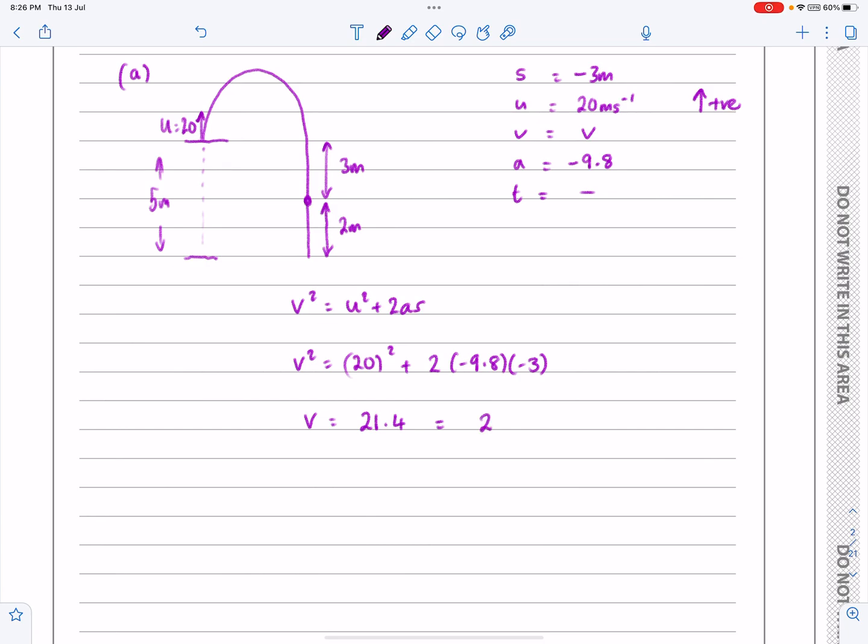Or rather, 21 metres per second. We should only ever do these questions to two significant figures if I'm taking g as being minus 9.8, because then that is to two significant figures. So that's part A.